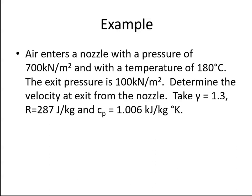And we are to assume that γ = 1.3, R = 287 J/kg, and Cp, the specific heat capacity at constant pressure, is 1.006 kJ/kg·K. R here is the universal gas constant.